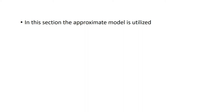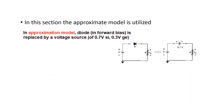A point to note: in this section, the approximation model is utilized. In the approximate model, we have a 0.7V battery replacing the diode. The rest of the circuit remains the same — we replace the diode with 0.7V. Throughout this chapter, we will follow this model.